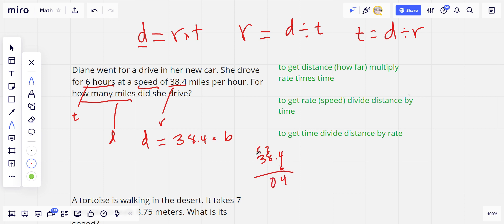6 times 3 is 18, plus 5 is 23. So we've got 234, but we have one decimal place here. So 230.4. And this is how many miles did she drive? So that's 230.4 miles. All right, let's look at the next one.